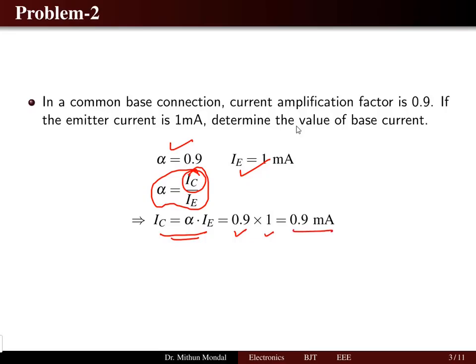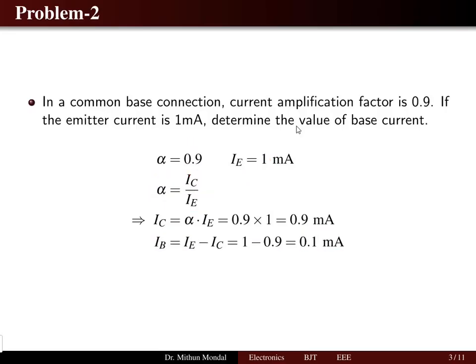From KCL, emitter current equals base current plus collector current. So base current equals emitter current minus collector current, which comes to be 0.1 milliamps.